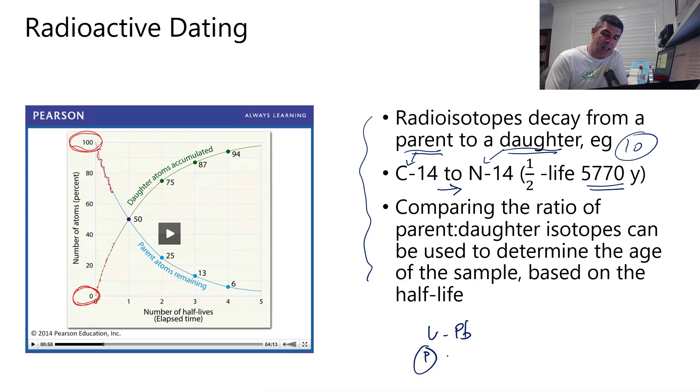In this case, uranium is the parent and lead is the daughter. And the uranium breakdown, radioactive breakdown cycle, half-life, is much, much longer than that for carbon. So uranium is used as one of our methods for dating extremely old material.